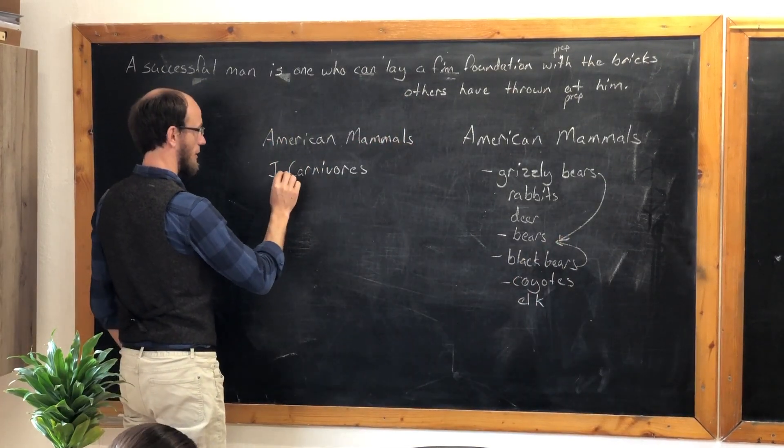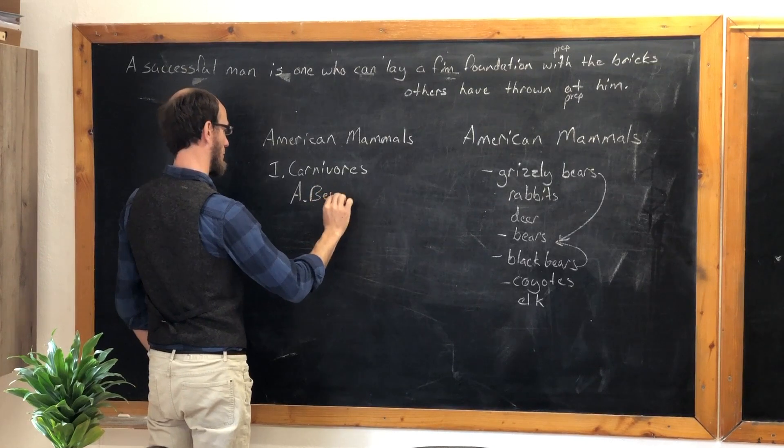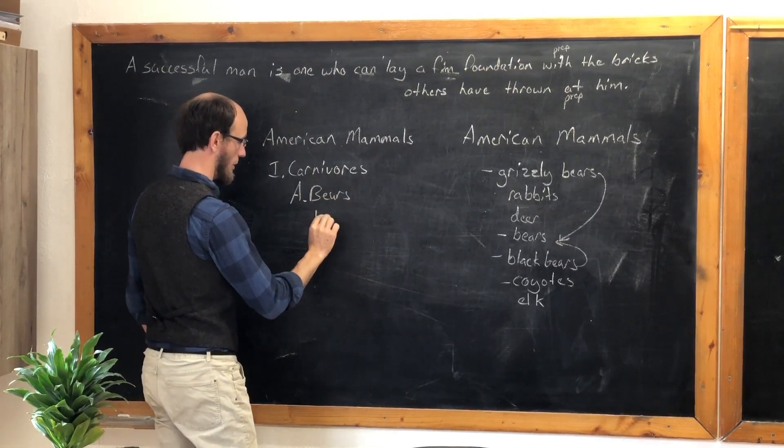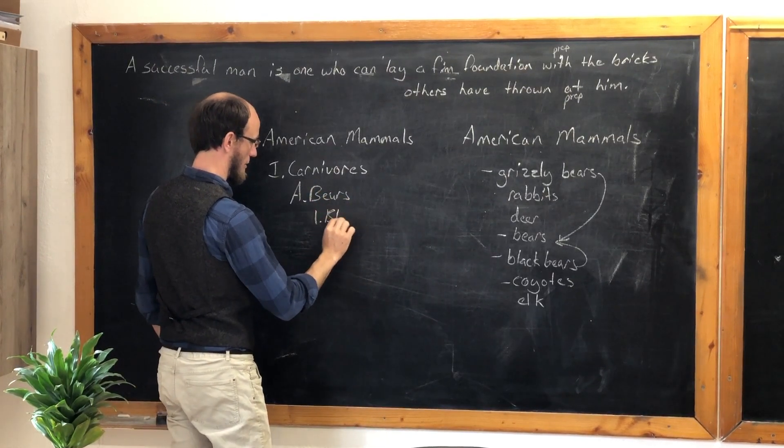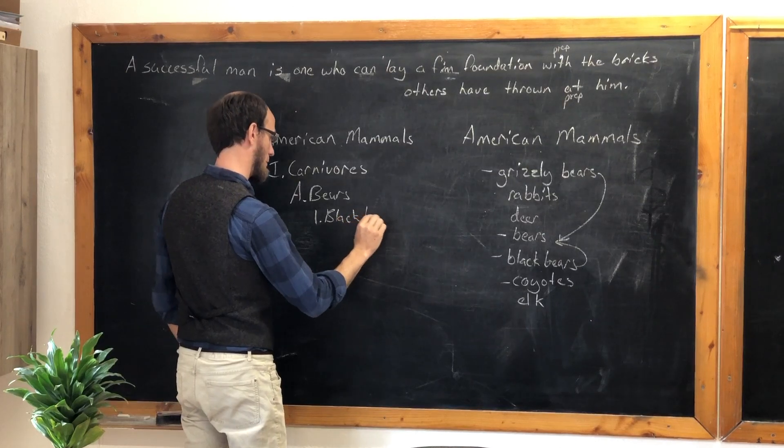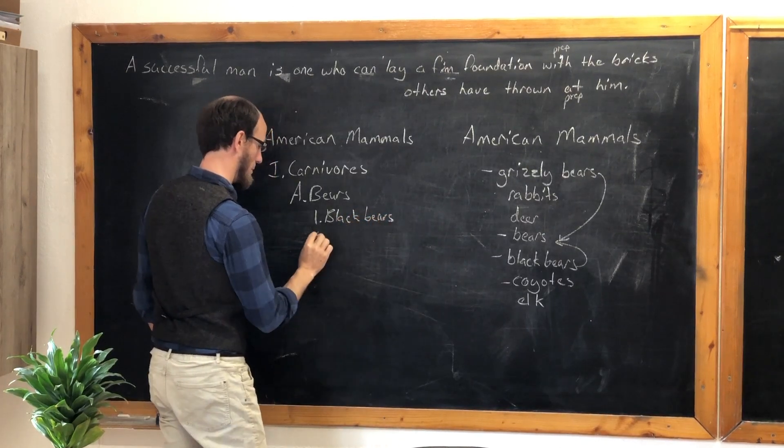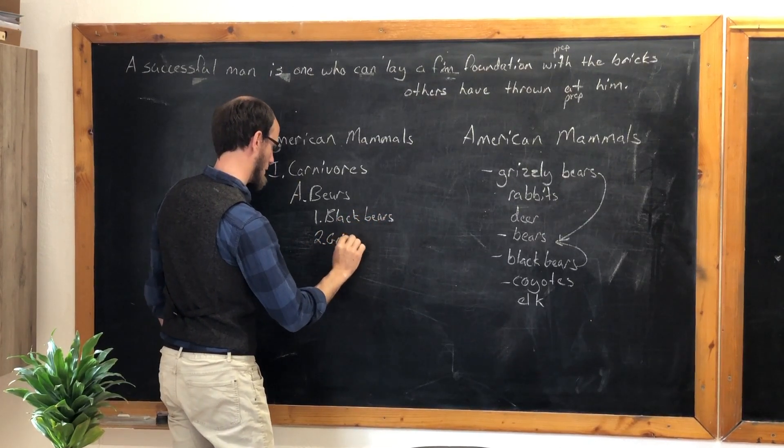So we can start with A period. Bears are carnivores. And they have number one period, black bears. And number two period, grizzly bears.